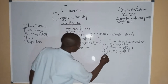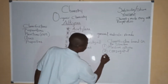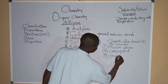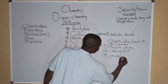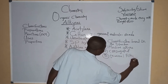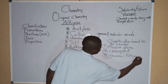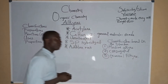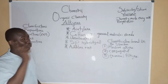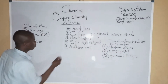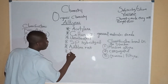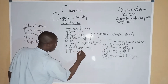And also we have the terminal alkynes. Now, alkynes are compounds with triple bonds.